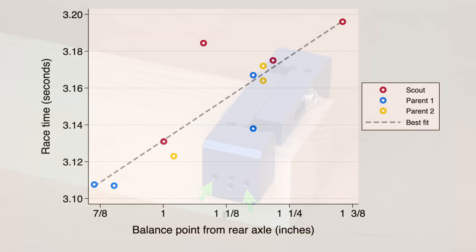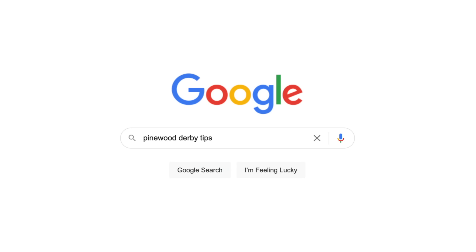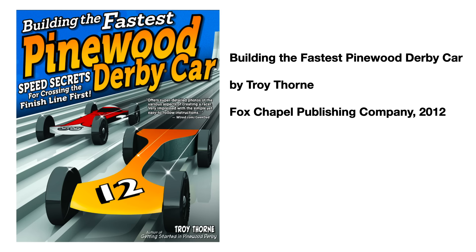I can't stress enough the importance of weight position. Here's a graph for some cars we have made. It shows that as the balance point moves closer to the back of the car, the race time goes down, meaning a faster car. Even a quarter inch can make a difference. You can learn a lot by Googling for Pinewood Derby tips. But we learned the old fashioned way. We checked out this book from our public library. It covers nearly all the tips we use and much more.